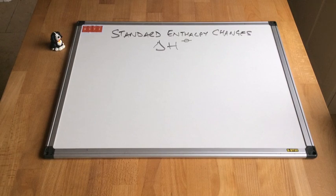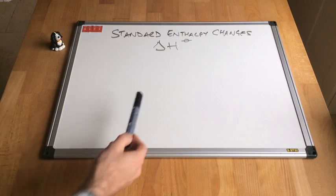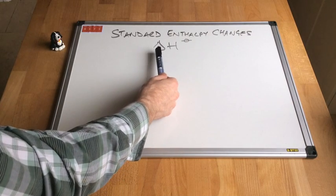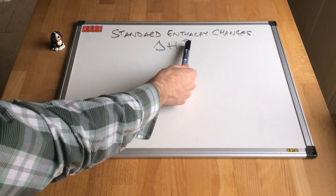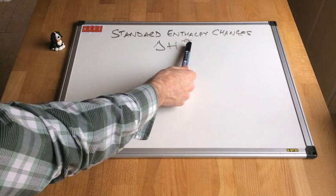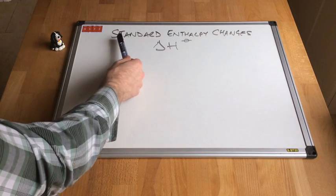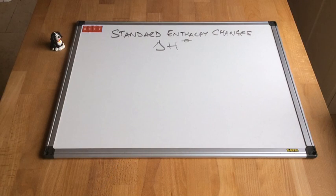In this video we're going to look at standard enthalpy changes. You can see there's a little bit of extra detail here. We've not just got delta H, we've got this symbol here. This symbol denotes standard enthalpy changes.